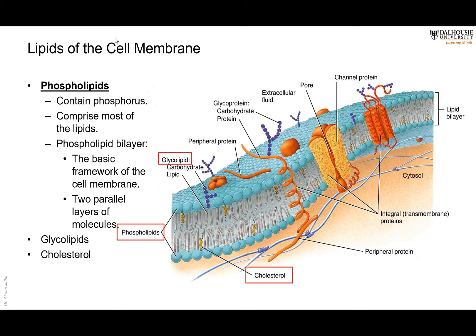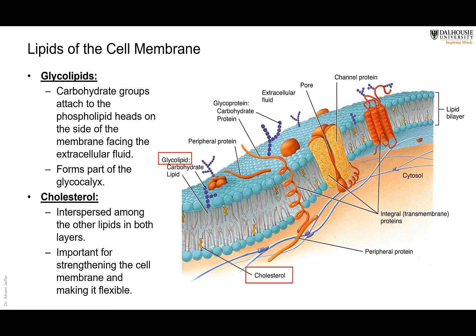Going back to the composition of the cell membrane: phospholipids are the main type of lipids because they contain phosphate, and they comprise most of the lipids. We also have two other types: glycolipids and cholesterol. Glycolipids — as the name indicates, glyco meaning glucose — have a sugar molecule attached to the lipid. This glycolipid constitutes part of the glycocalyx, along with glycoproteins, which are sugar molecules attached to proteins. Glycoproteins and glycolipids together form the sugary coat of the cell, like the glaze on a donut.